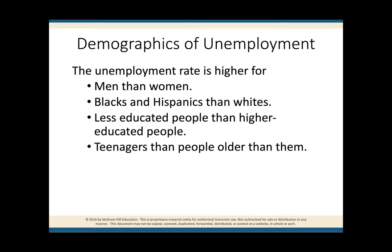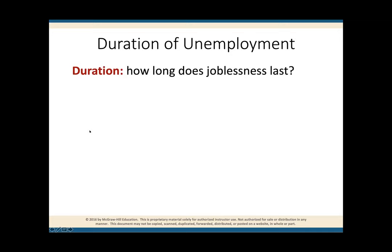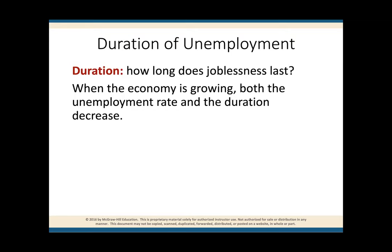Teenagers also have higher rates of unemployment than older people. Companies prefer to hire people they believe are more reliable and will stay for the longer term. We know teenagers are only looking for a job temporarily — just to make some money while going to school. So companies think twice before hiring a teenager. The question of how long people are out of work depends on how the economy is doing. When the economy is in recession, people are out of work for a longer period of time. When the economy is growing, both the unemployment rate and the duration decrease.